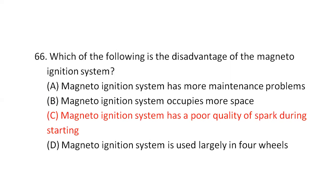Which of the following is a disadvantage of the magneto ignition system? Option C — poor quality of spark at starting.